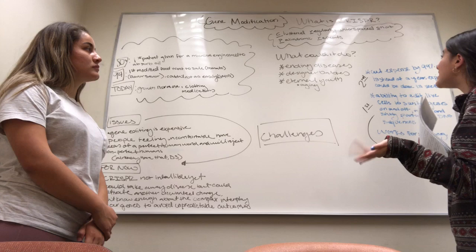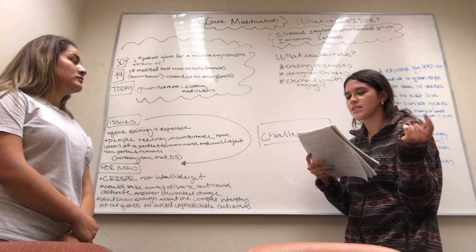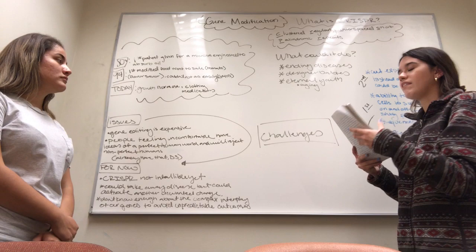By ending diseases, in 2015 scientists used CRISPR to cut the HIV virus out of living cells from patients. They also did this in 2016 with rats.